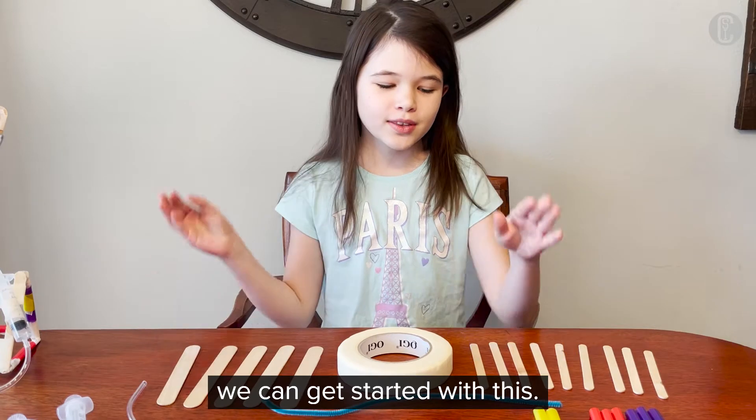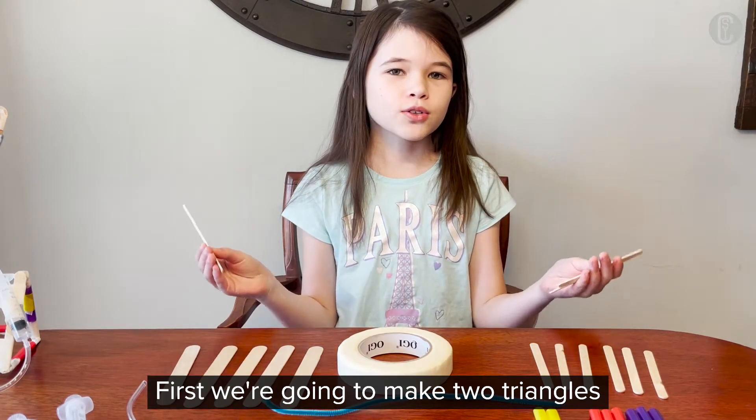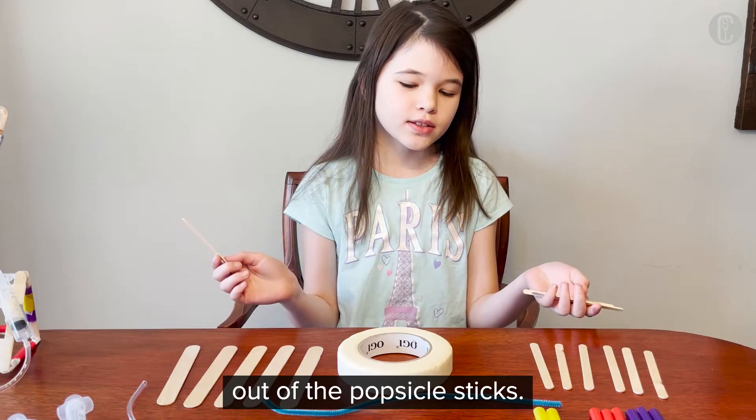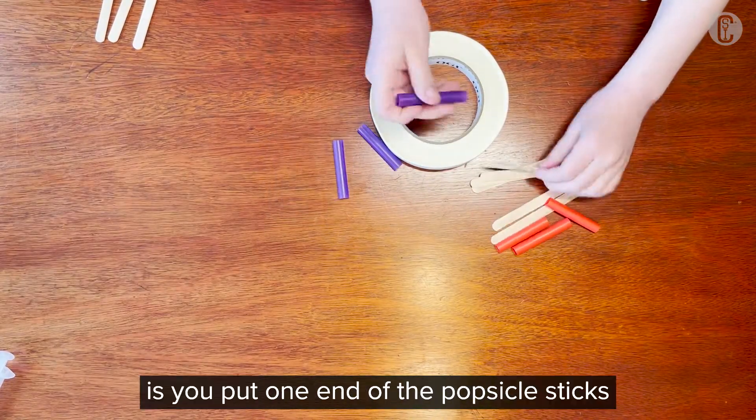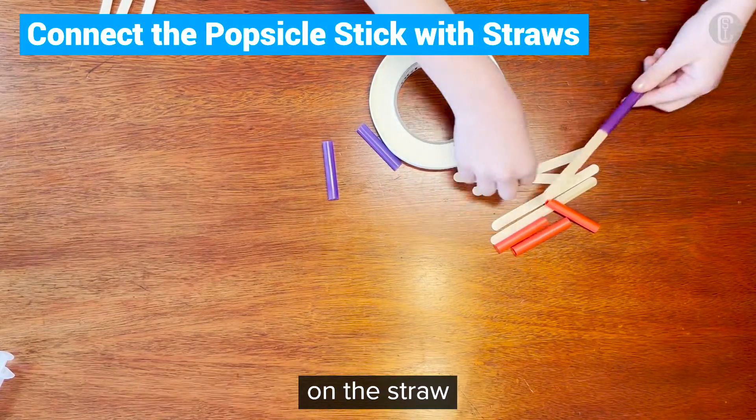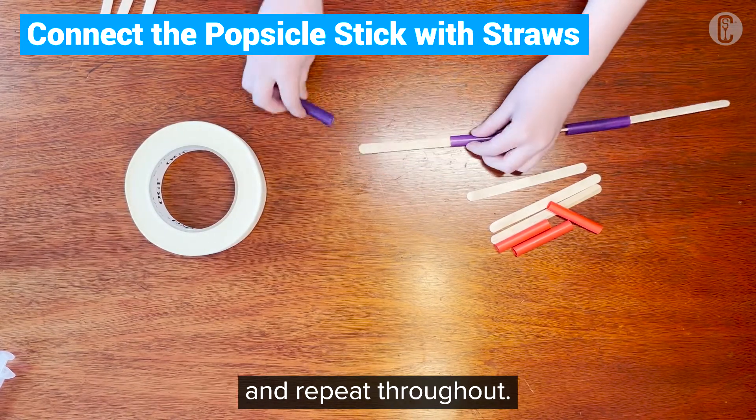First we're going to make two triangles out of popsicle sticks. So the thing you do is you put one end of the popsicle sticks on the straw and the other end same one, and repeat throughout.